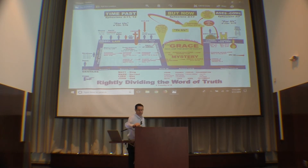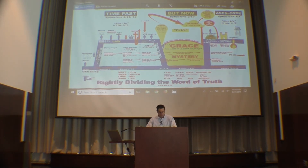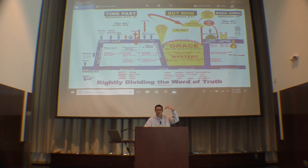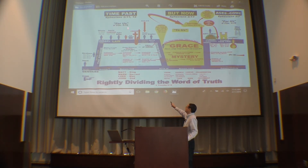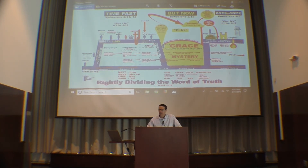Back to Ephesians 3, verse 3: 'How that by revelation he made known unto me the mystery.' The mystery is hidden wisdom. God revealed it to Paul — which means it wasn't known prior to that. Now look at verse 5. And I don't know what you do with this other than just be a dispensationalist: 'Which in other ages was not made known.' Now people want to say, well, Isaiah knew it, and Jeremiah knew it, and David knew it, and Peter knew it. What does verse 5 say? It doesn't say they didn't understand it — it says it wasn't even made known. It wasn't made known because it hadn't been revealed.